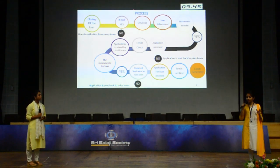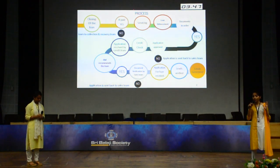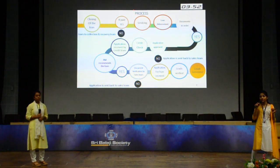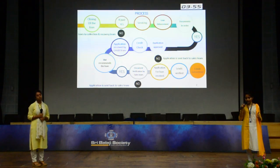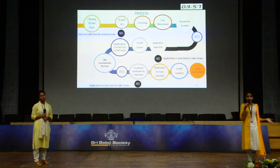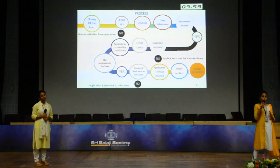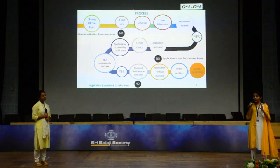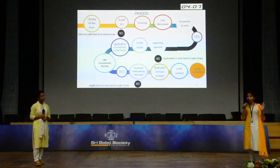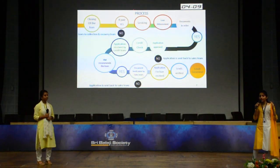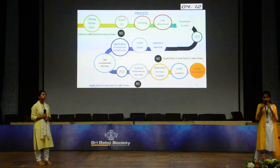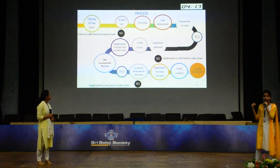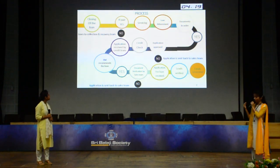The next step the credit appraiser takes is very crucial and is divided into two parts. First is the obligation check, where he checks the person's previous history — the number of loans taken, the number of loans paid, and the manner of repayment, including any defaults. Then he prepares the CIBIL report, which gives a credit score based on the person's past history. This score ranges from 0 to 900, and a score above 780 is usually considered good for approving the loan.